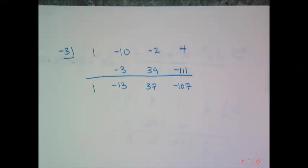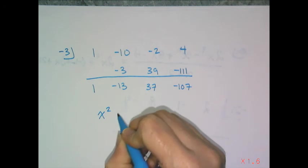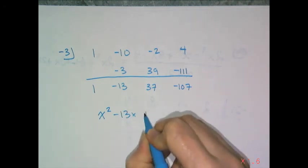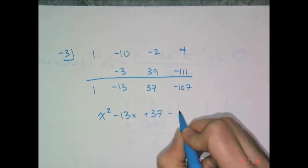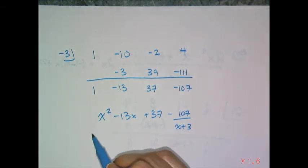So for that last problem when you did synthetic division, your work should look just like this and that means your answer is going to be x squared minus 13x plus 37 minus 107 over x plus 3. So that's what you should have gotten for the last example.